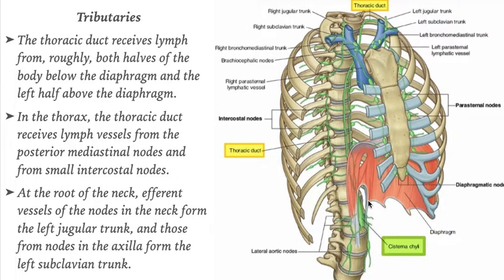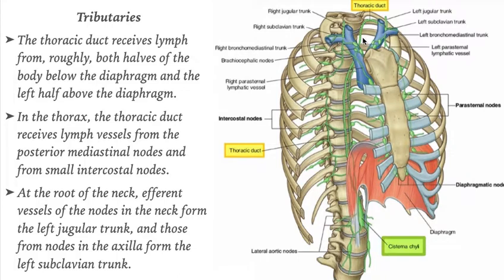Regarding tributaries, the thoracic duct receives lymph from roughly both halves of the body below the diaphragm and the left half above the diaphragm. In the thorax, it receives lymph vessels from the posterior mediastinal nodes and small intercostal nodes. At the root of the neck, efferent vessels of the nodes form the left jugular trunk, and those from the axilla form the left subclavian trunk.